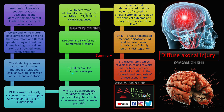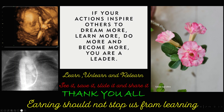T2, FLAIR, and DWI are typically useful for characterizing non-hemorrhagic lesions, whereas T2-star GRE and susceptibility-weighted imaging classically diagnose microhemorrhagic or hemorrhagic DAI. MRI is the most diagnostic tool for DAI in persistent vegetative states after severe head trauma or poor GCS. Schaffer et al. demonstrated that volume of altered DWI shows a stronger correlation with clinical outcome and Glasgow Coma Scale than FLAIR. On DTI, areas show decreased fractional anisotropy and increased mean diffusivity implying neural disintegration; 3D tractography revealing disruption of white matter fibers provides useful information in diagnosis and prognosis of diffuse axonal injury.